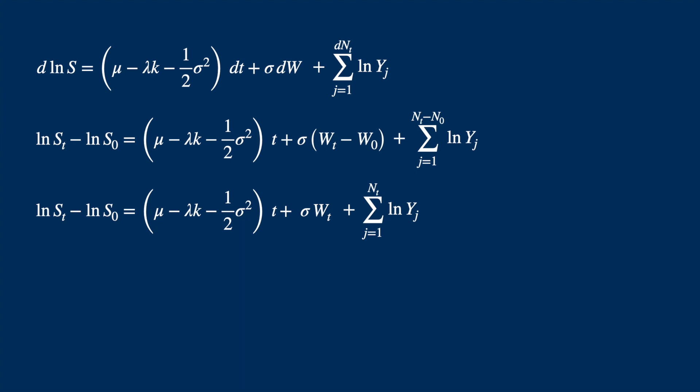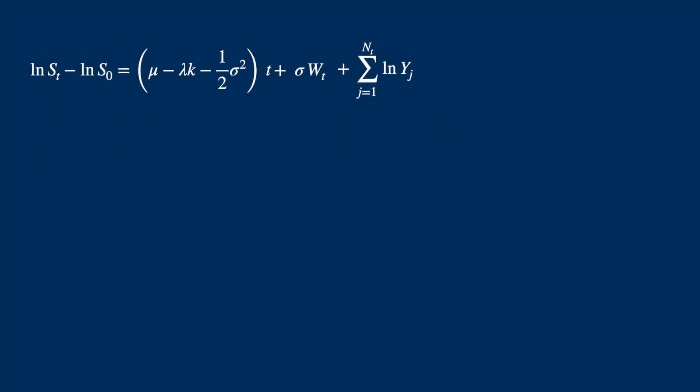Now remember Y, which is the jump size factor, is assumed to be log normal, which means log of Y is normal. Let's represent its mean and standard deviation by mu underscore y and sigma underscore y. Let's say we know the number of jumps is equal to n. Then the summation term just represents sum of n random normals, which again will be normal. We will just need to add their means and variances because they are independent normals. Essentially multiply them by n, as we are just dealing with n identical variables.